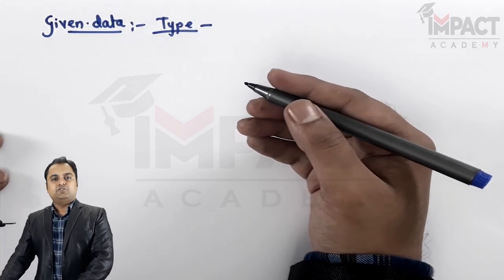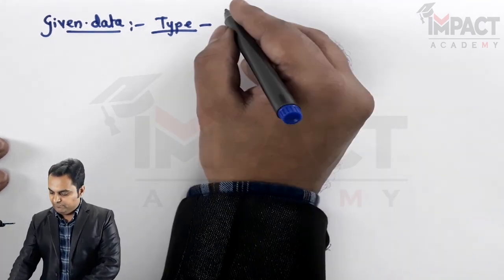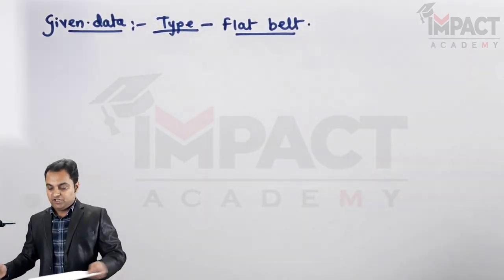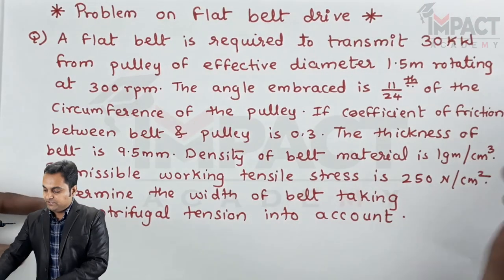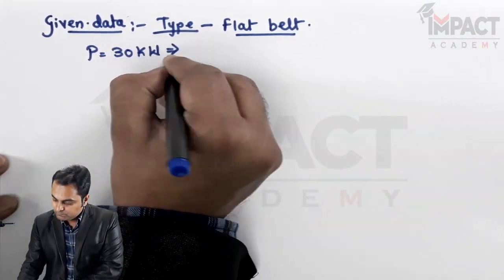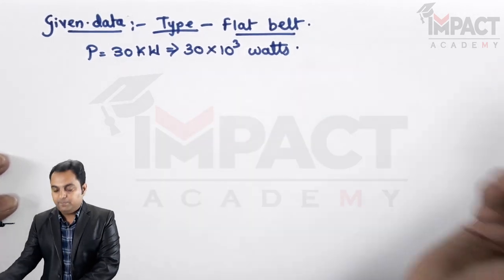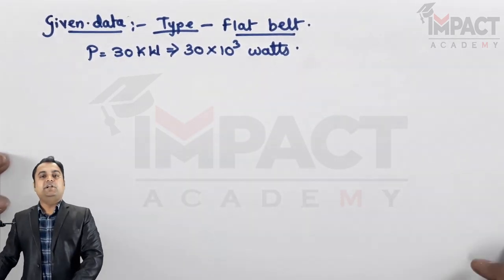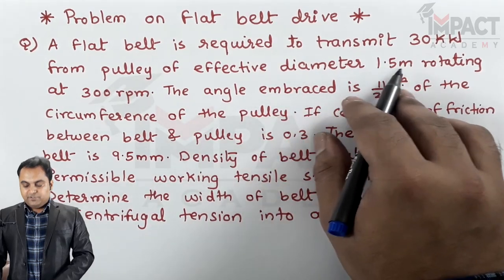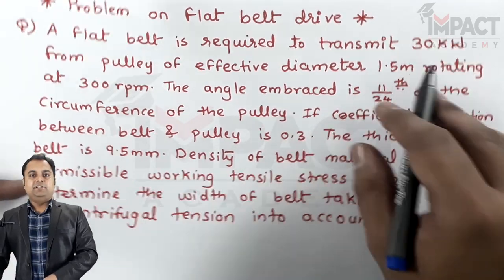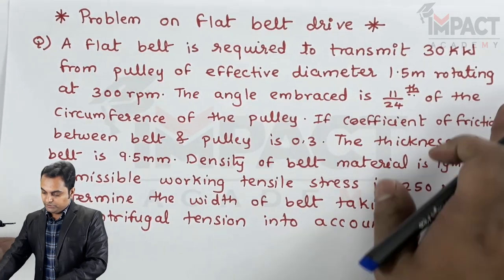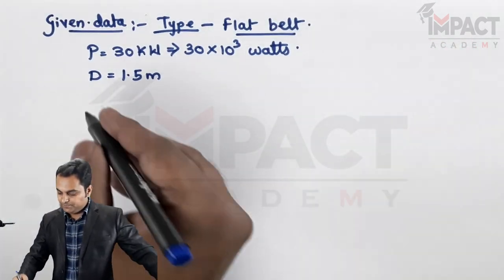This is a flat belt problem. The power to be transmitted is 30 kilowatt, which multiplied by 1000 gives 30,000 watts. The pulley has an effective diameter of 1.5 meter and is rotating at 300 rpm.